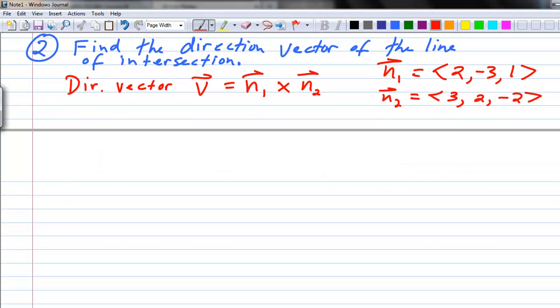Now we're ready to use these two normal vectors to find our direction vector. So v equals the cross product of the two normal vectors, which here we're going to use the determinant form to find this cross product. We've got our i, j, and k. N1 was 2, negative 3, 1. N2 is 3, 2, negative 2.